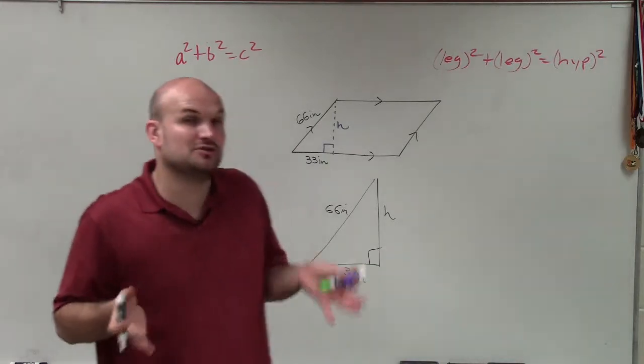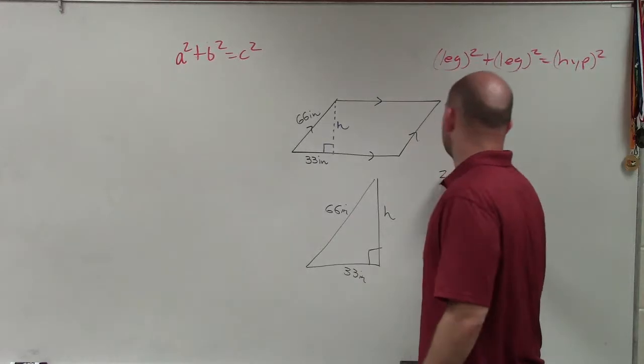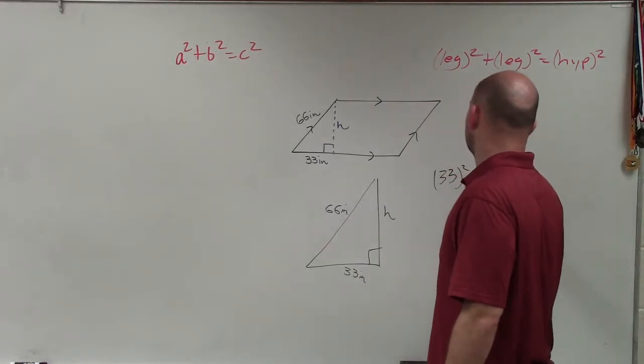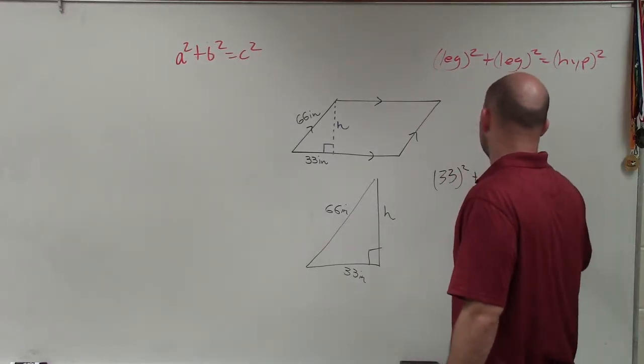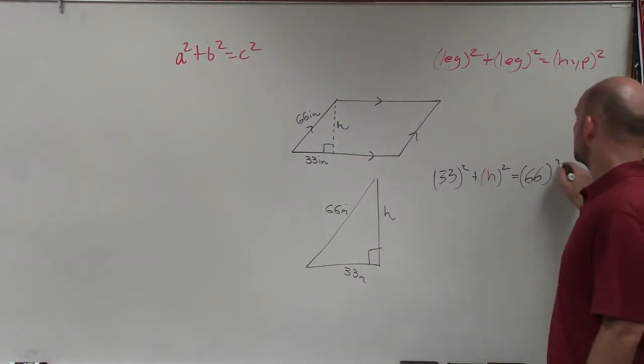So to be able to do this, again, we need to use our Pythagorean Theorem. One of our formulas doesn't really matter. And I can say 33 squared plus your height squared equals 66 squared.